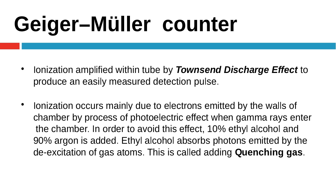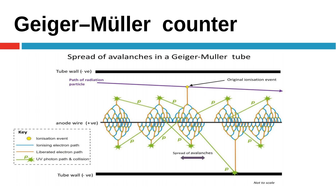Ionization occurs mainly due to electrons emitted from the chamber walls by the photoelectric effect when gamma rays enter. To control this, a quenching gas is used: 10% ethyl alcohol and 90% argon. The ethyl alcohol absorbs photons emitted by the de-excitation of gas atoms. Due to the quenching gas, ionization from the photoelectric effect is controlled.